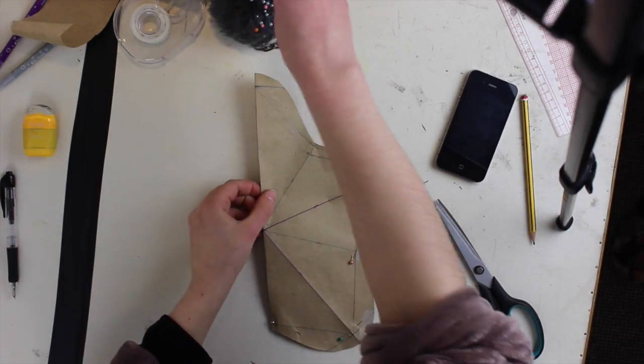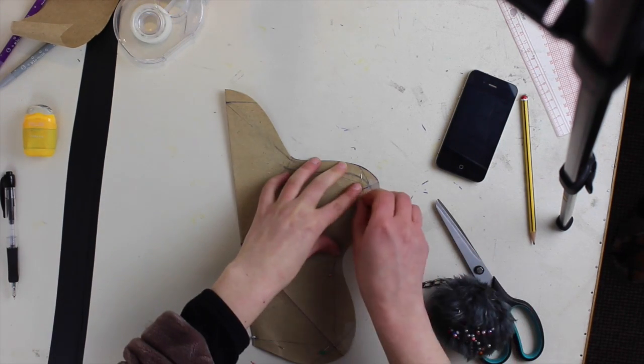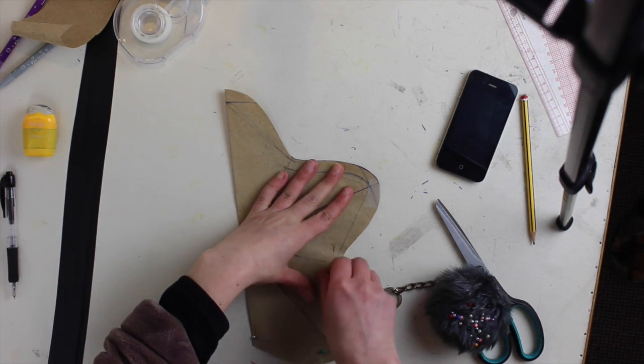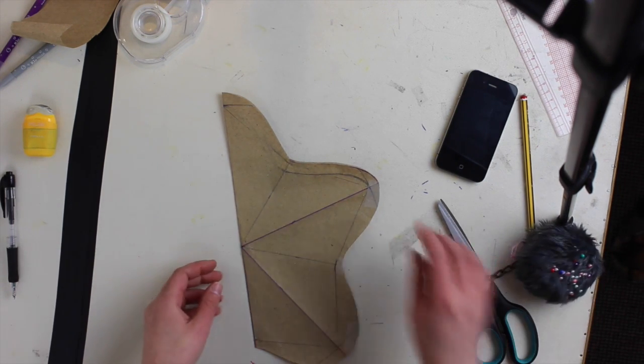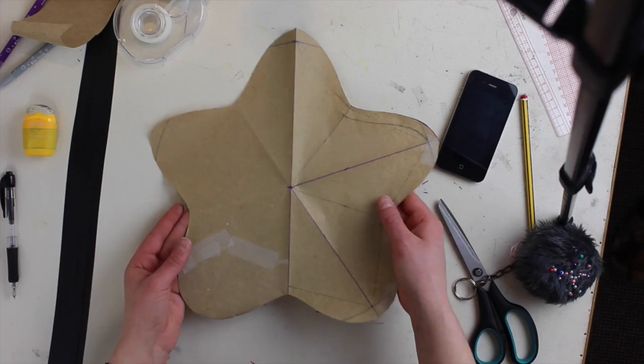And once your first half is cut, you can fold it in half and repeat the same process for the whole thing for the second half of your star. So once everything is cut, here is where you should have a star shape.